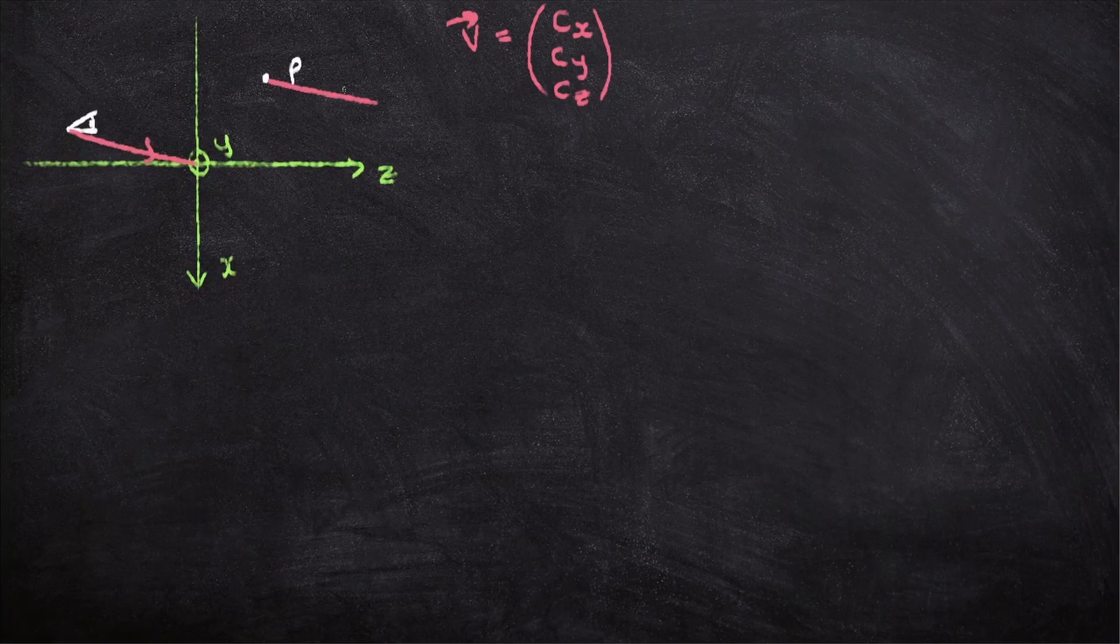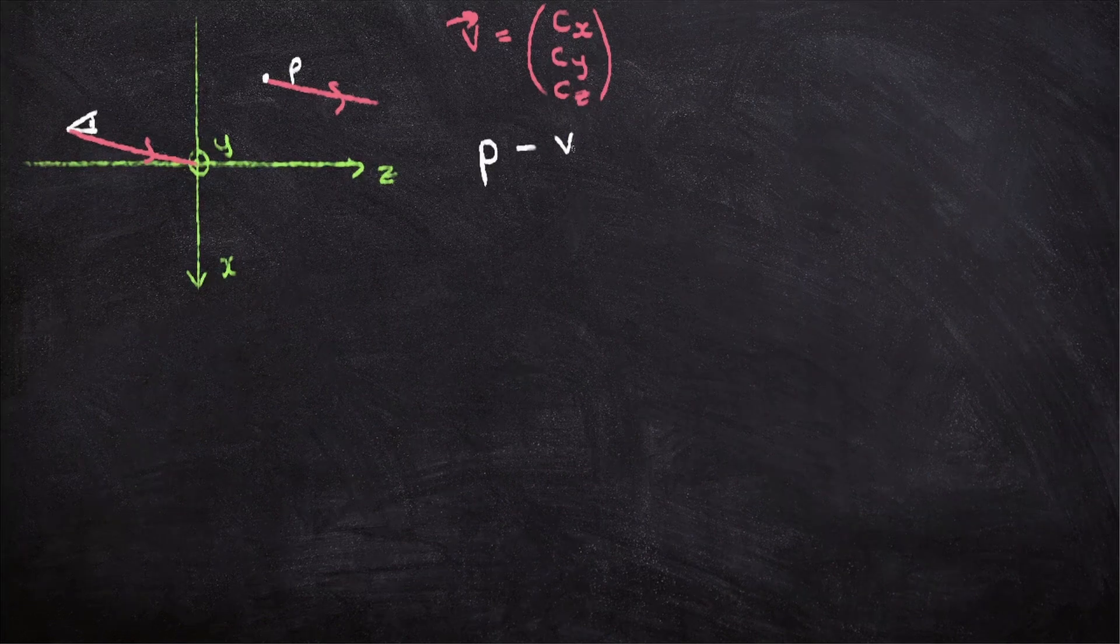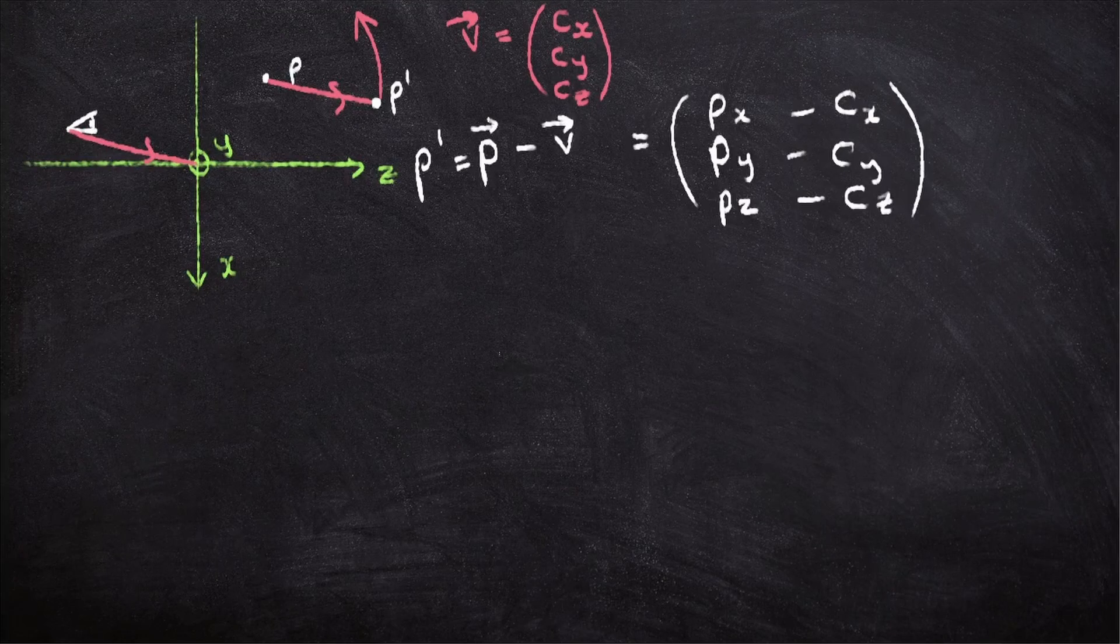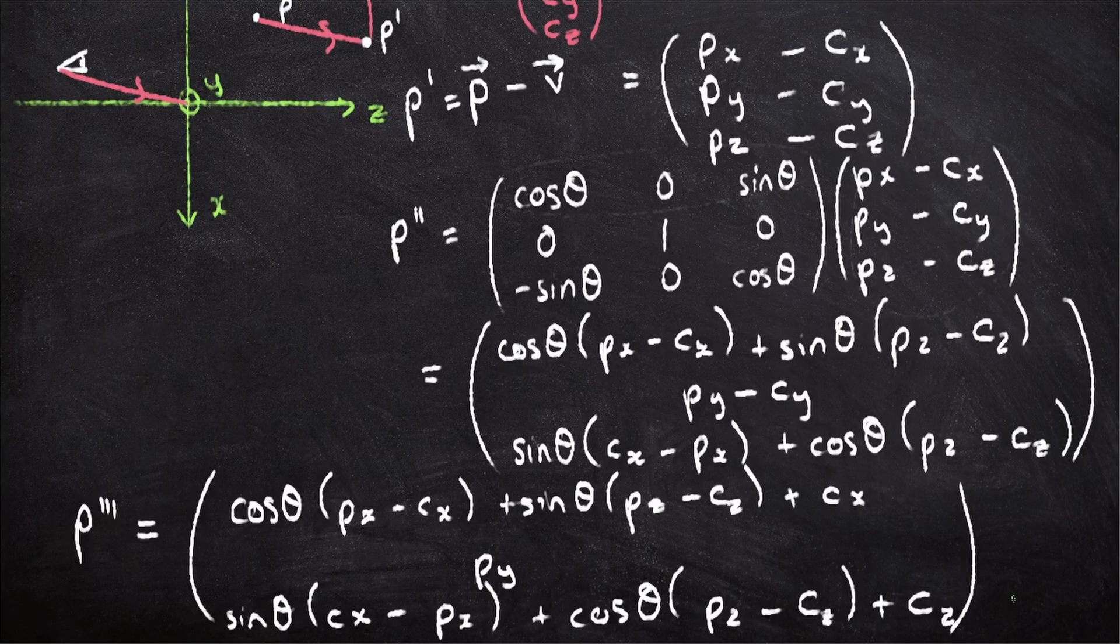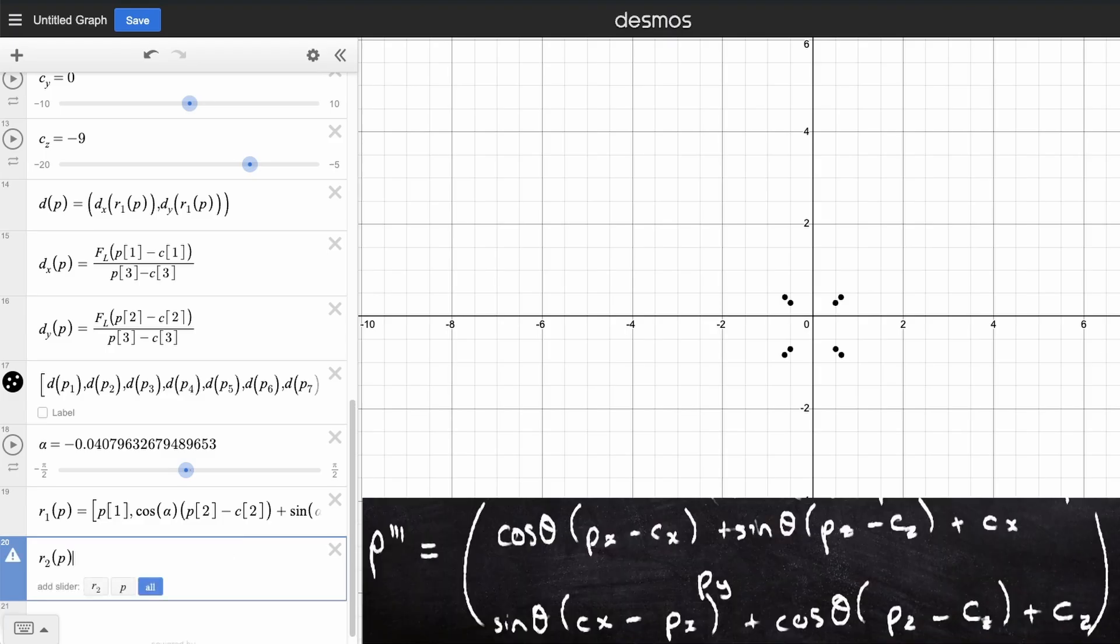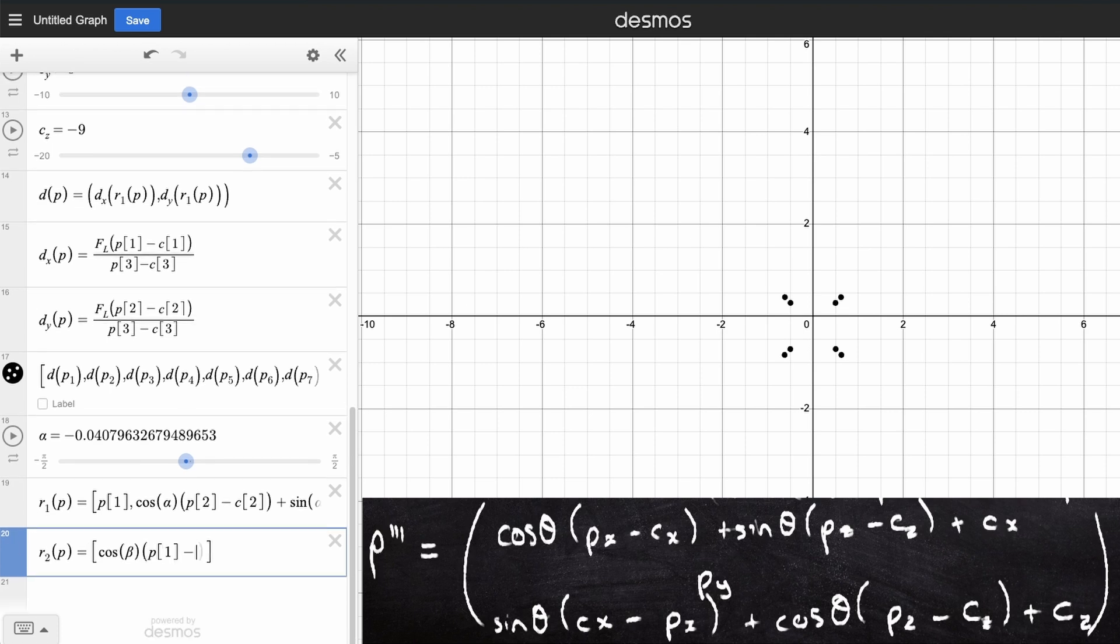So we're going to repeat this for yaw. The first step is to transform everything by the vector minus V. Next, we're going to rotate anti-clockwise about the y-axis. And then the last step is to add on the vector V. So we get... And now we can put that into Desmos and rotate around the y-axis. So now we're going to add our second rotation. So let's have a look at the blackboard. So we multiply that by PX minus CX plus sine beta PZ minus CZ. And then lastly, plus CX. Okay, now the next point is PY and that just doesn't change. So that's just P2. And then we've got sine beta CX minus PX plus cosine beta PZ minus CZ. And then lastly, we're going to add CZ to the end.